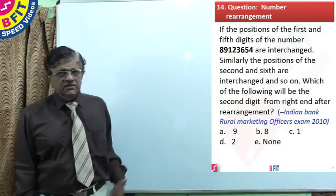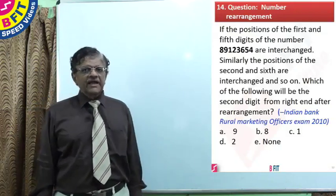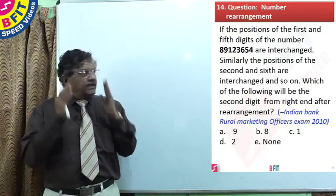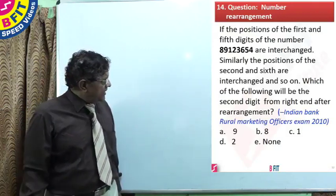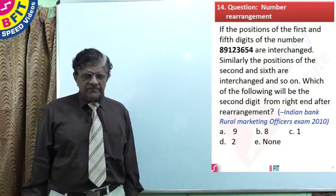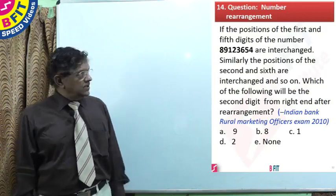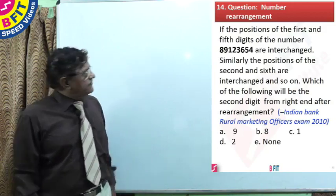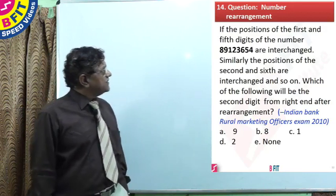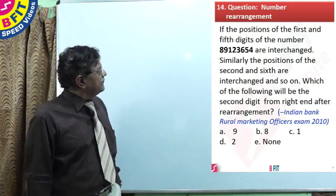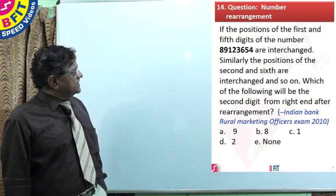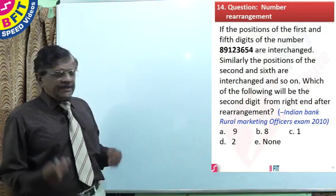Now, let us go to the next question, which involves number rearrangement. This question has been asked from Indian Bank Rural Marketing Officers exam 2010. What does the question say? If the positions of the first and fifth digits of the number 8, 9, 1, 2, 3, 6, 5, 4 are interchanged.